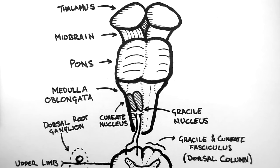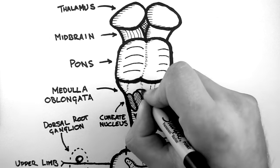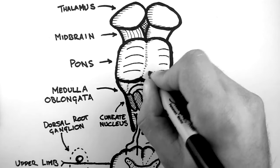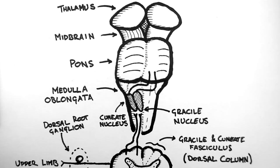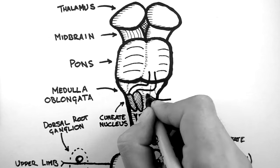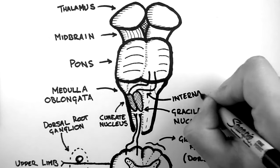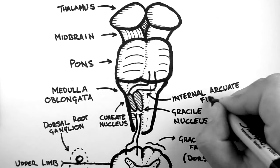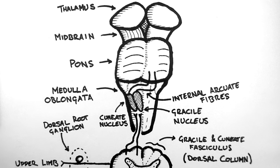The axons of the neurons in the nuclei then continue ascending. First they cross over to the other side of the brain stem. This is known as a decussation. Here the tract is known as the internal arcuate fibers, because in a cross section they arc across the brain stem.